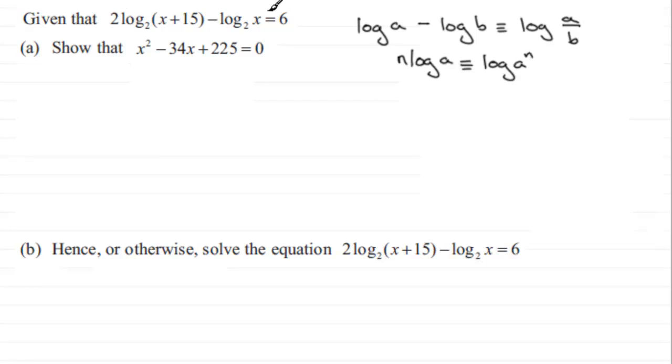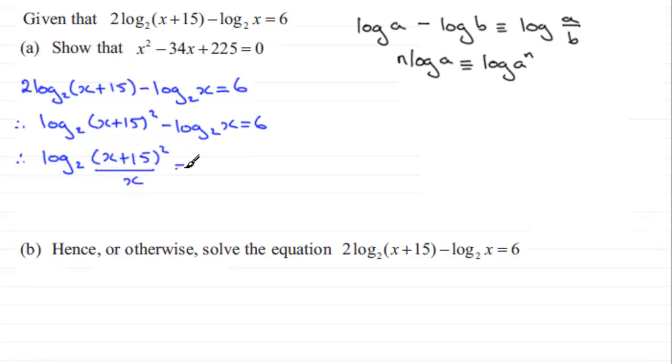So if I just write down our equation, we've got 2 log base 2 of x plus 15 minus the log base 2 of x equals 6. Now we remove the 2 by saying that this is exactly the same as the log base 2 of x plus 15 all squared, and then we've got minus the log base 2 of x equals 6. Now I can use this rule here and say that this is exactly the same as the log base 2 of x plus 15 all squared divided by x, and this equals 6.